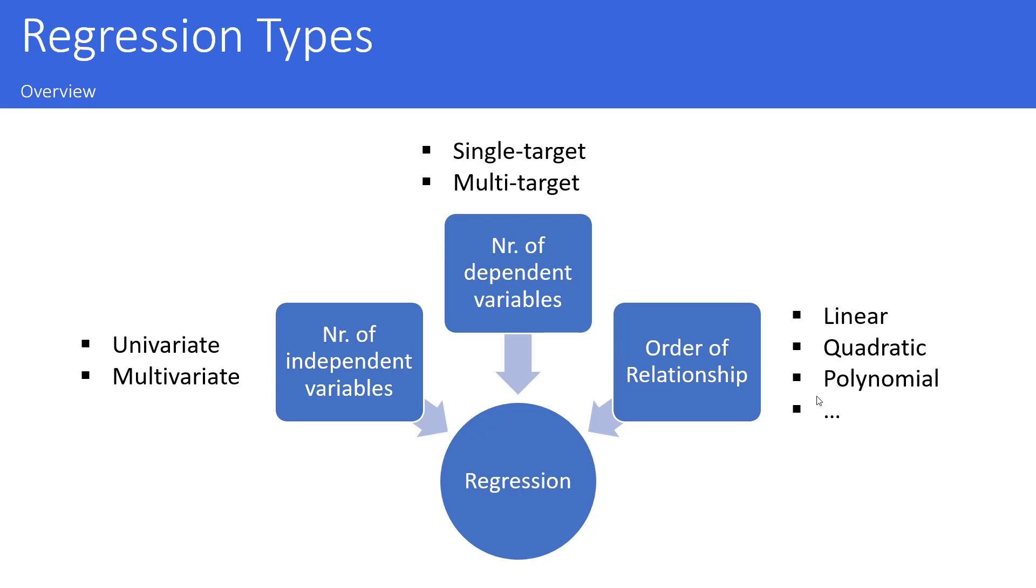The next important parameter is the number of dependent variables. The most usual case is that you have one dependent variable. This is called single target. But it is also possible to create models with more than just one target variable. In this case it is called multi-target regression.